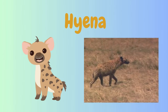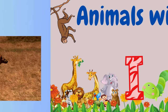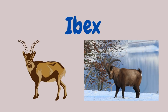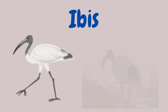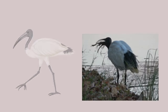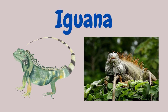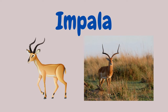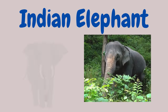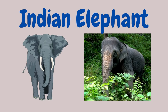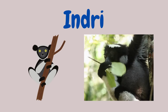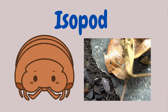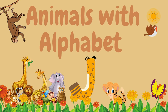Animals with Alphabet I. Hyena. Ibex. Ibis. Iguana. Impala. Indian Elephant. Indri. Isopod.